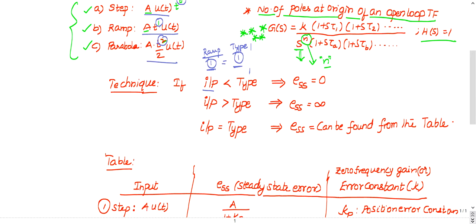The rules are: if input is less than type, steady state error = 0 — choose that option directly, no calculation needed. If input is greater than type, steady state error = infinity. Only when input and type are equal do you need to calculate the steady state error from the table.